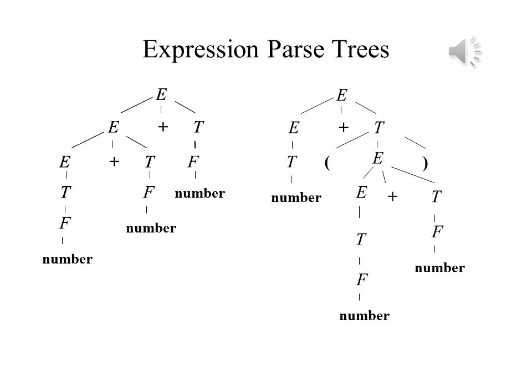In the left tree, the left son — the expression — derives an expression, a plus sign, and a term, and ultimately derives two numbers. The term derives a factor that derives a number. The parse tree on the right is different. Its left son, the expression, simply derives a term, which derives a factor, which derives a number. The right son, the term, derives an expression in parentheses, and that also ultimately leads to two numbers.